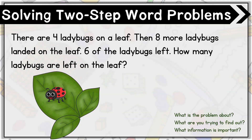Let's go through our three-read strategy to figure out what this problem is asking us. First of all, we want to know: what is the problem about? Well, based on reading this, I learned that this problem is about ladybugs on a leaf.